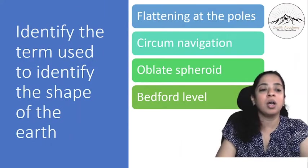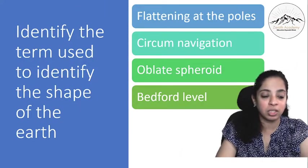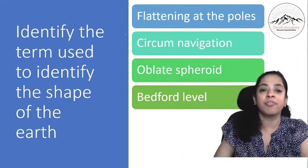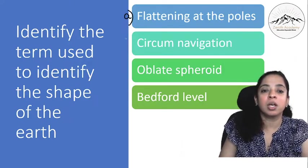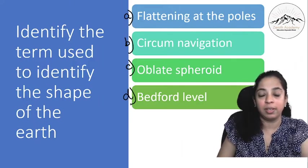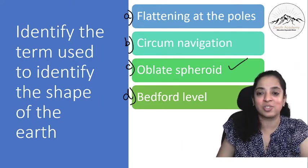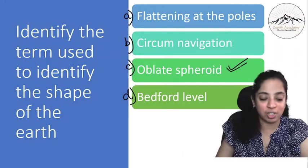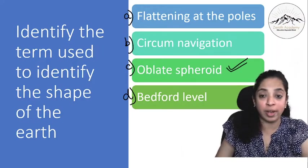Identify the term used to identify the shape of the Earth. So was it flattening of the poles, circumnavigation, oblate spheroid, or Bedford level? Yes, my dear students, it is oblate spheroid.